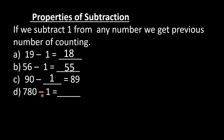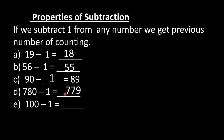In D part, 780 minus 1 — what is the previous number of 780? That is 779. In E part, 100 minus 1 is equal to 99.